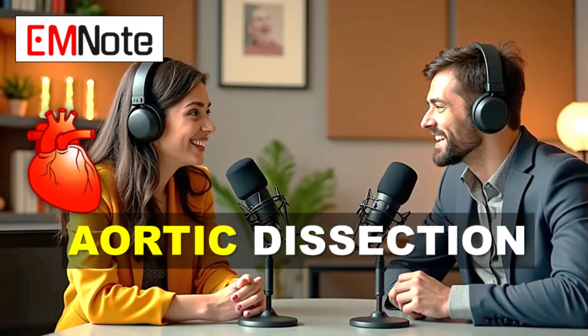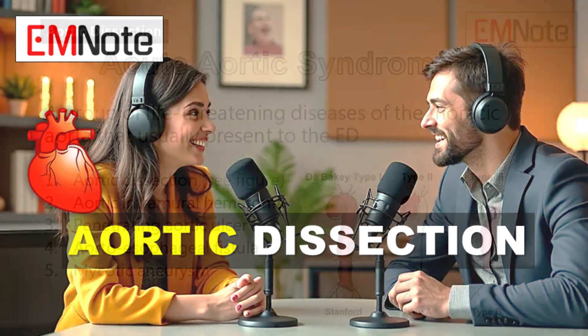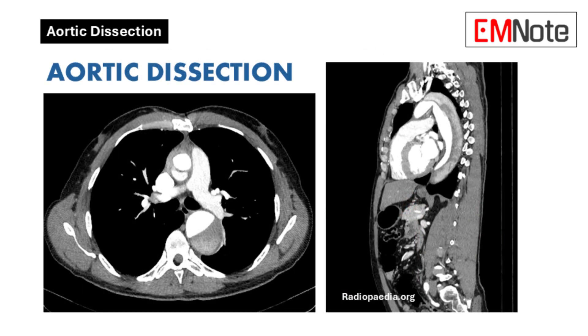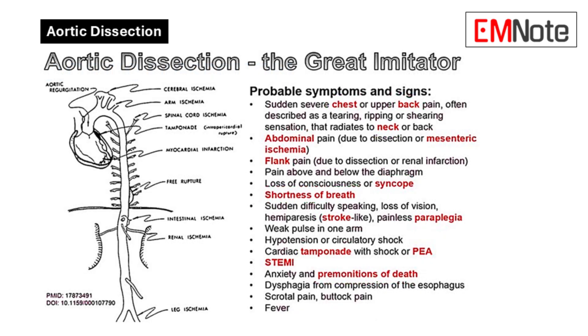Let's jump right in — today we're tackling a pretty tough diagnosis: aortic dissection. As young doctors and nurses, you're really going to need to be ready for this one. This is a serious condition where recognizing it quickly is absolutely critical. We're going to focus on practical stuff you can use right away: pain patterns, physical exam findings, and some key initial tests.